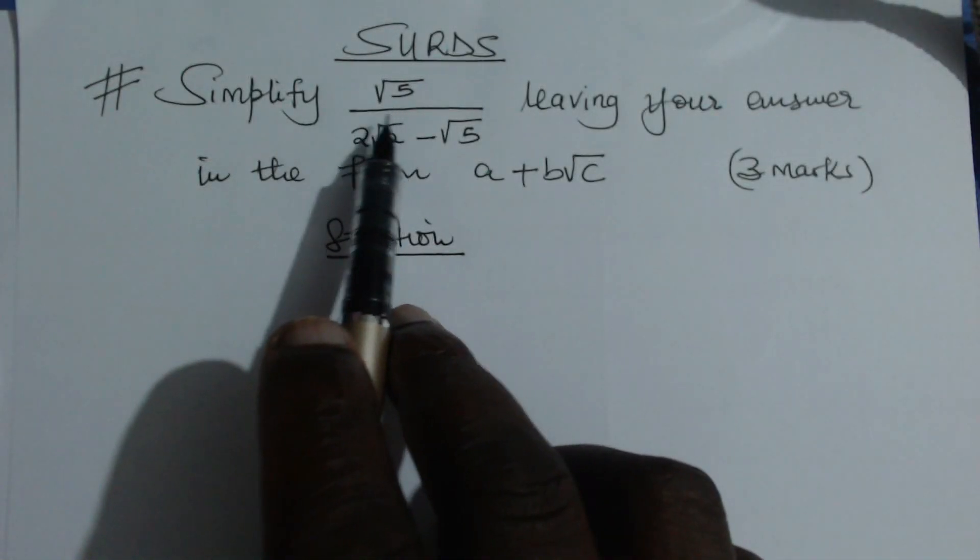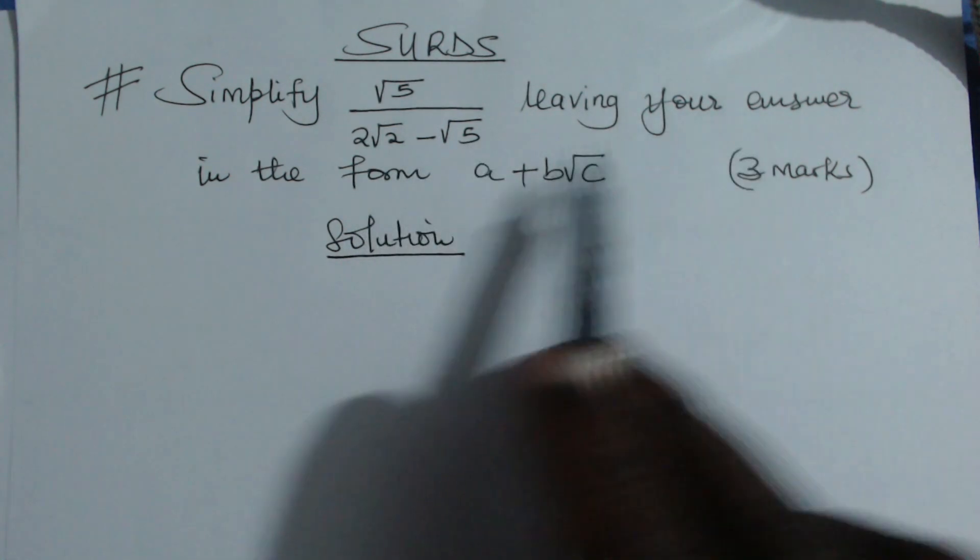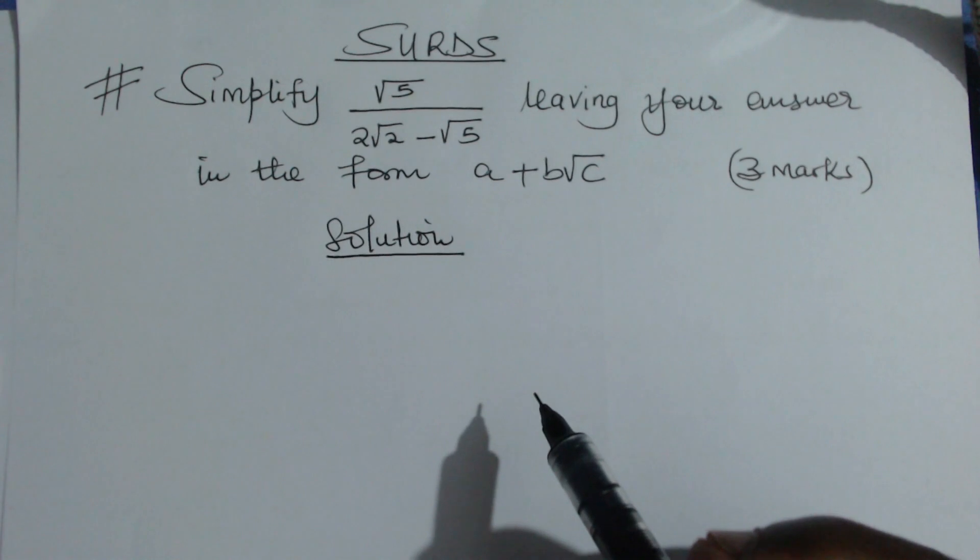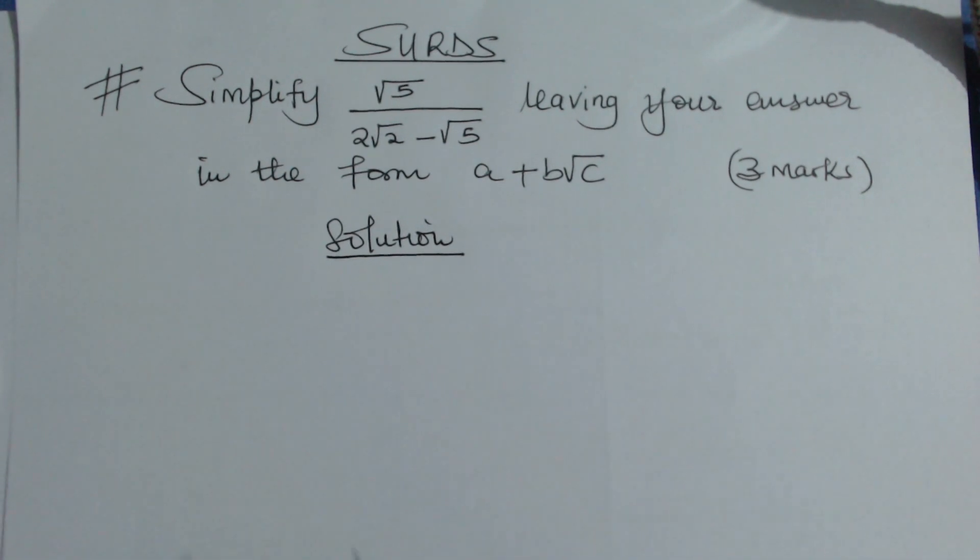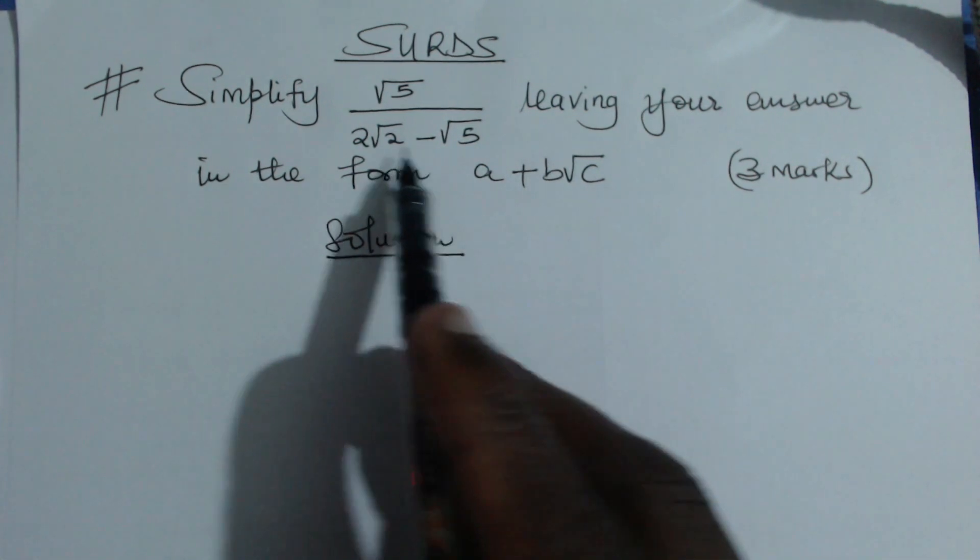Simplify √5 divided by 2√2 - √5, leaving your answer in the form a + b√c. To solve this question, we must begin by rationalizing the denominator. And how do we rationalize the denominator?